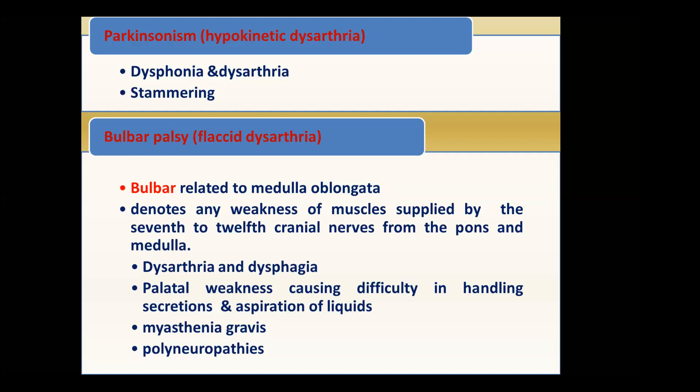Myasthenia gravis and polyneuropathy can also cause dysarthria. In myasthenia gravis, the main pathology is a receptor defect for acetylcholine — the acetylcholine receptors are defective, so the patient cannot use acetylcholine, causing contraction abnormality and weakness. Parkinson's disease involves dopamine abnormality, whereas myasthenia gravis involves acetylcholine abnormality. Acetylcholine is excitatory while dopamine is inhibitory.